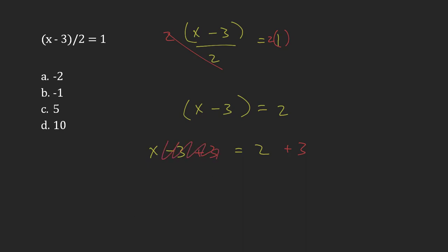These will cancel, leaving me just with x. And then on the other side, it adds to 5.